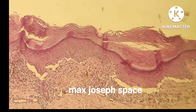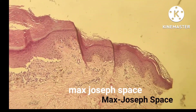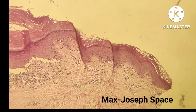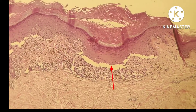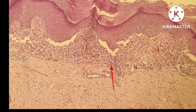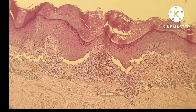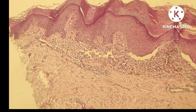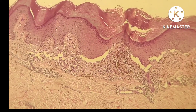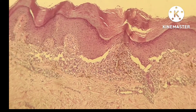This biopsy shows a very prominent Max-Joseph space — we say artifactual separation between epidermis and dermis. Many times if it is formed in vivo, it forms the vesicular type of lichen planus. These vesicles develop due to extensive damage to the basal cells.